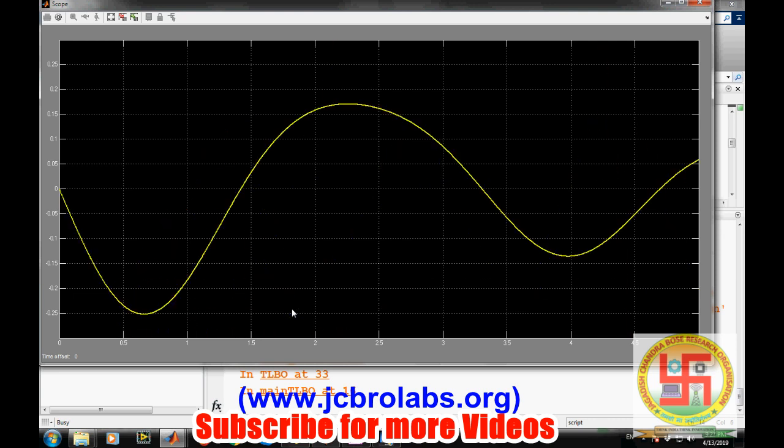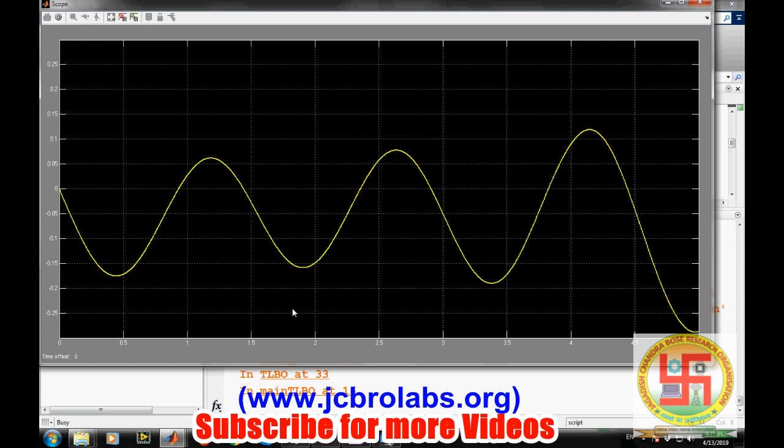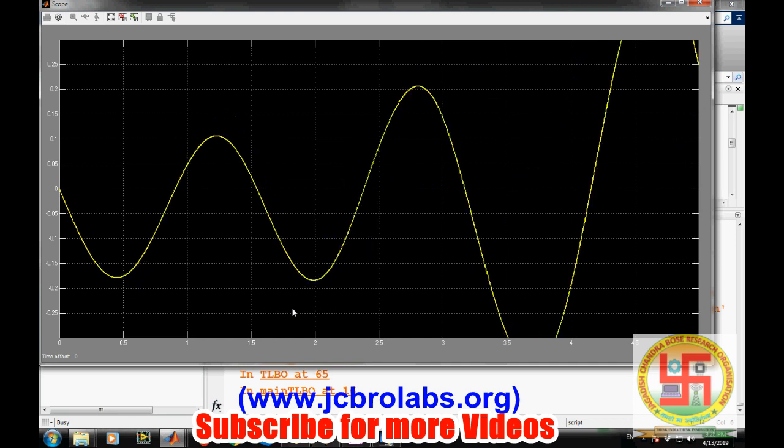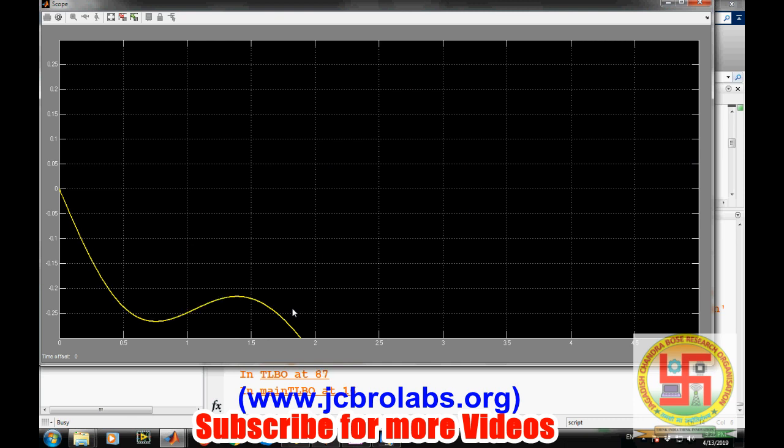Let's run it. You just need to run this file and everything will start optimizing automatically. Optimization has been started. This was for demonstration purpose. If you require any help in your model or want to have this particular model for your research work, you can contact us at www.jcbrolabs.org. As per your requirement, this optimization can also be changed to particle swarm optimization, genetic algorithm, WSA algorithm, gray wolf algorithm, or any other optimization algorithm available for research purpose.